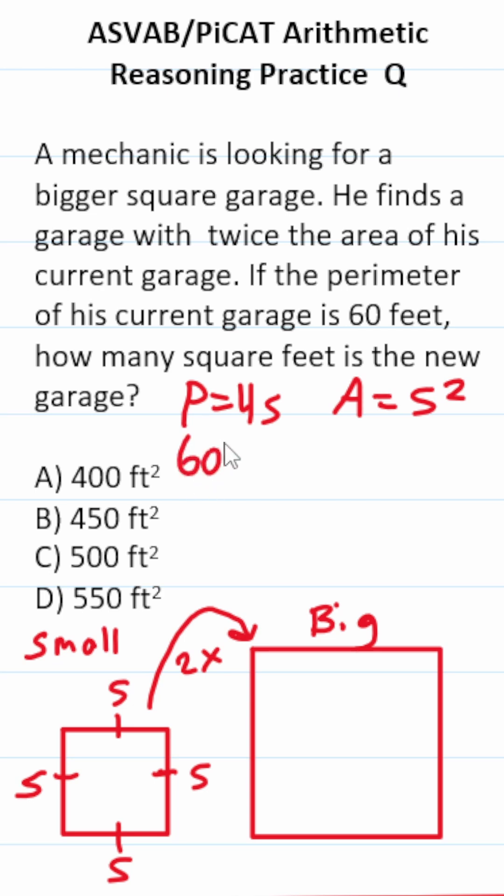We know his current garage has a perimeter of 60 feet, so that's going to be equal to 4s. By dividing both sides by 4, we can solve for s. This crosses out, leaving us with s. 60 divided by 4 is 15.